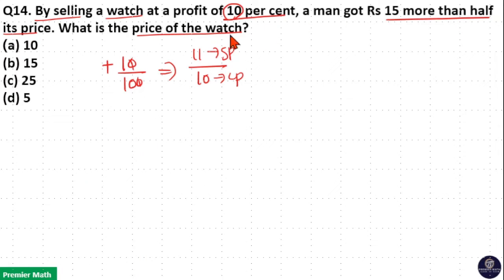Now this man got 15 more than half its price. So 15 plus half of the price means half of the cost price. Here cost price is 10 parts, so 10 by 2 is 5 parts.